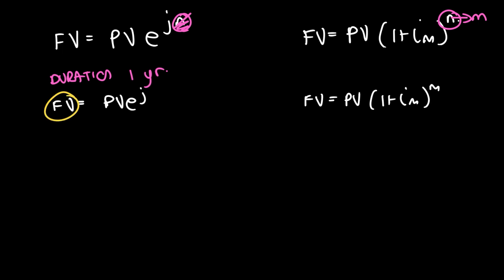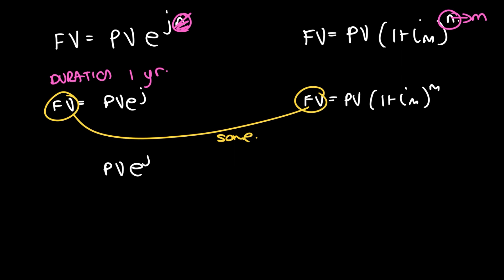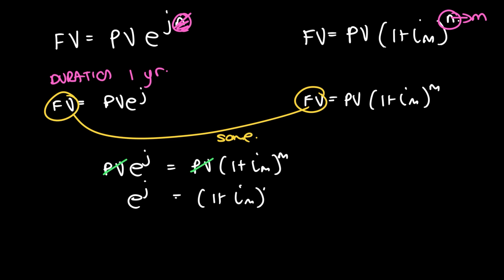Remember, we want the future values to be the same for equivalent effective interest rates, so we can set the two expressions equal to each other: PV·e^J = PV·(1 + iM)^M. Since the present values are the same, it simplifies to e^J = (1 + iM)^M.